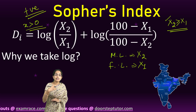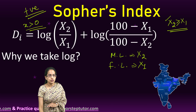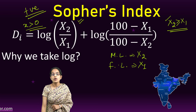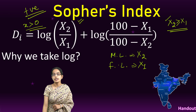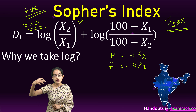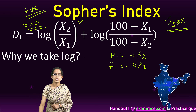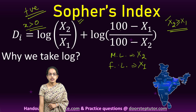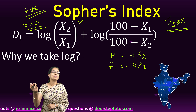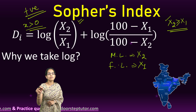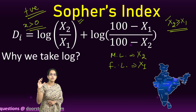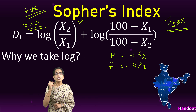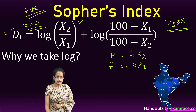Whichever phenomenon is greater would be taken as the numerator in the first case. In the second case, we say log of (100 minus x1) divided by (100 minus x2). The reason we inverse x1 and x2 here is that the value which is smaller would become bigger when kept in the numerator — 100 minus the smaller value gives a bigger value, so it goes in the numerator. This is Sofer's disparity index formula.